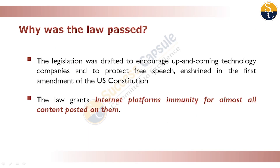Now we will talk about why this law was passed. This legislation was drafted so that free speech would be protected under the First Amendment of the US Constitution. The law also gives internet platforms immunity for content that others post on them — so Twitter is not liable for what users post, and if there is a bad review on Google, Google is not responsible for it.